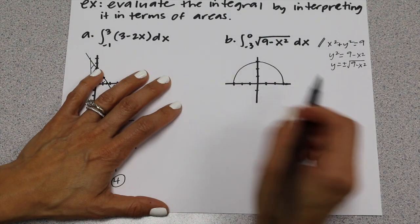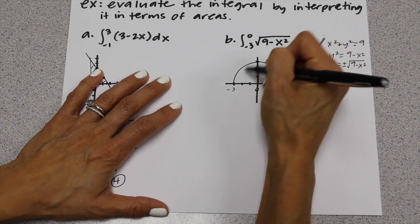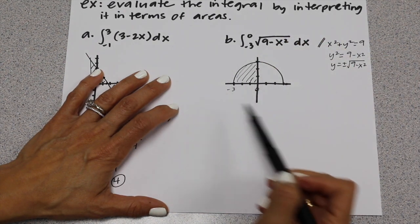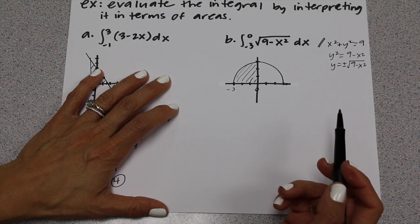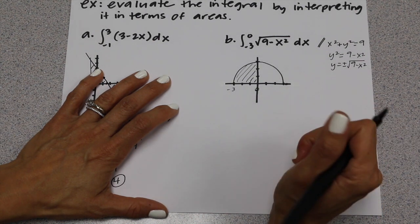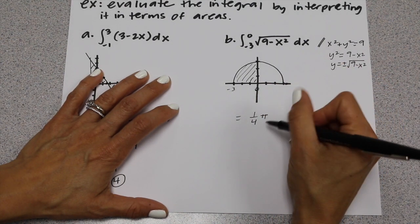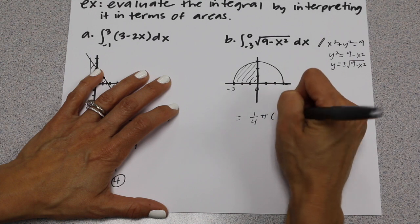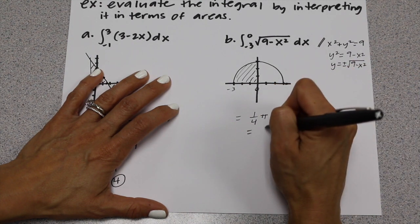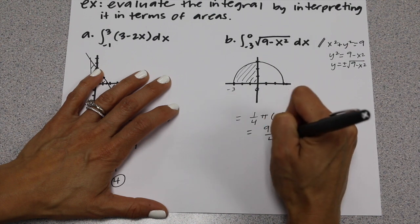We only want to evaluate from negative 3 to 0. So from negative 3 to 0, you're asking what portion of an entire circle with radius 3 we have — and we only have a quarter of a circle. So we want one-fourth of the area of a circle: one-fourth times π r², where r equals 3. On this problem you get 9π over 4.